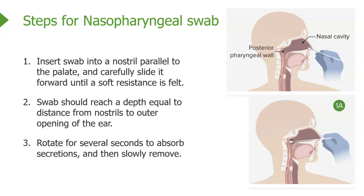First, insert the swab into the nostril parallel to the palate, then carefully slide it forward until you feel a soft resistance — do not force this, for the patient's safety. The swab should reach a depth approximately equal to the distance from the nostril to the outer opening of the ear. Leave it there and rotate it around for several seconds to absorb all the secretions.